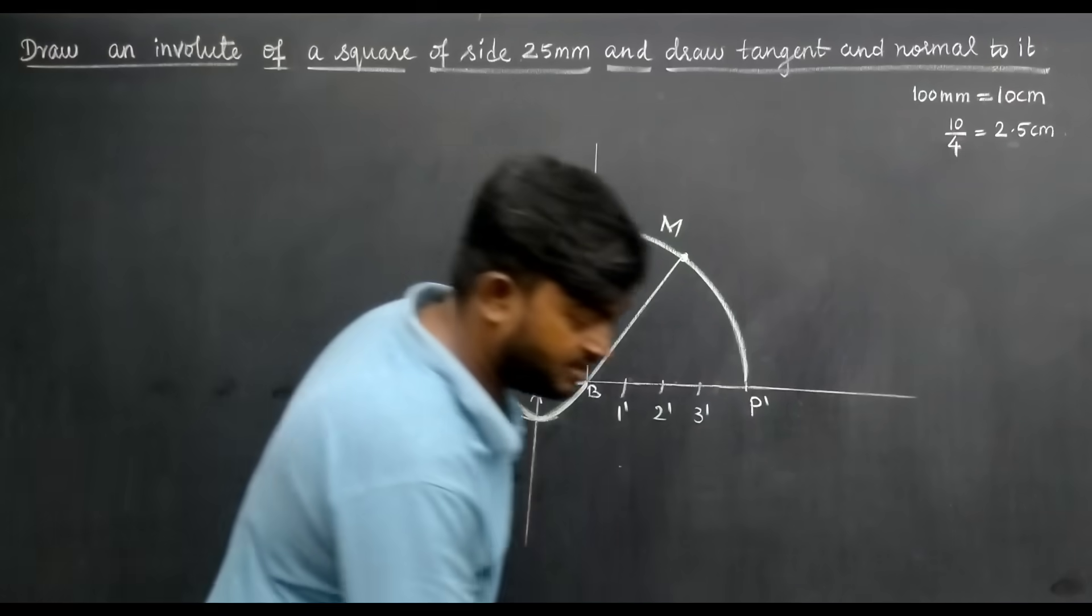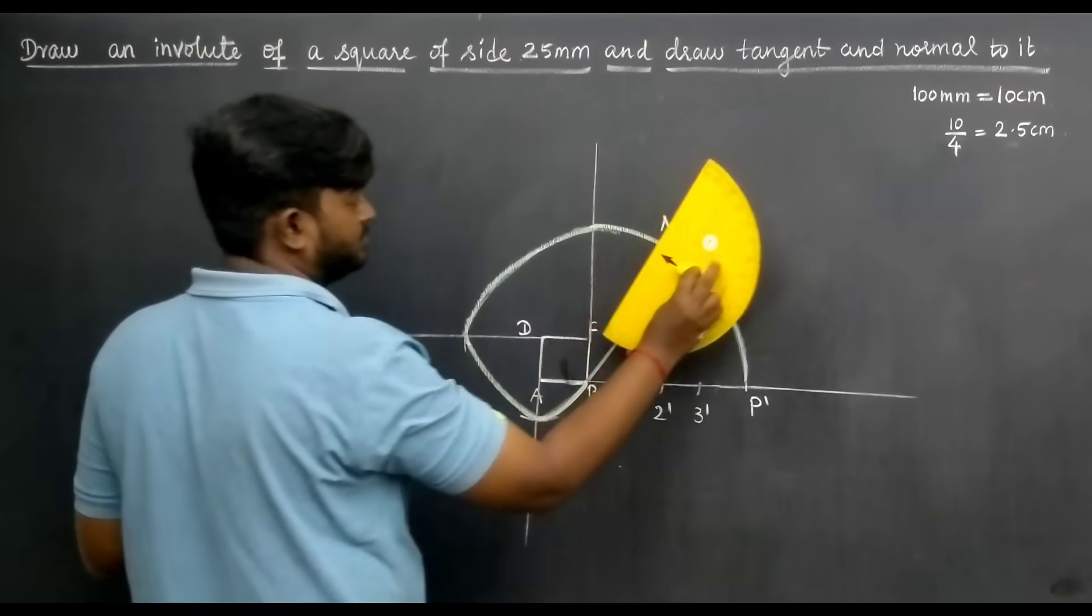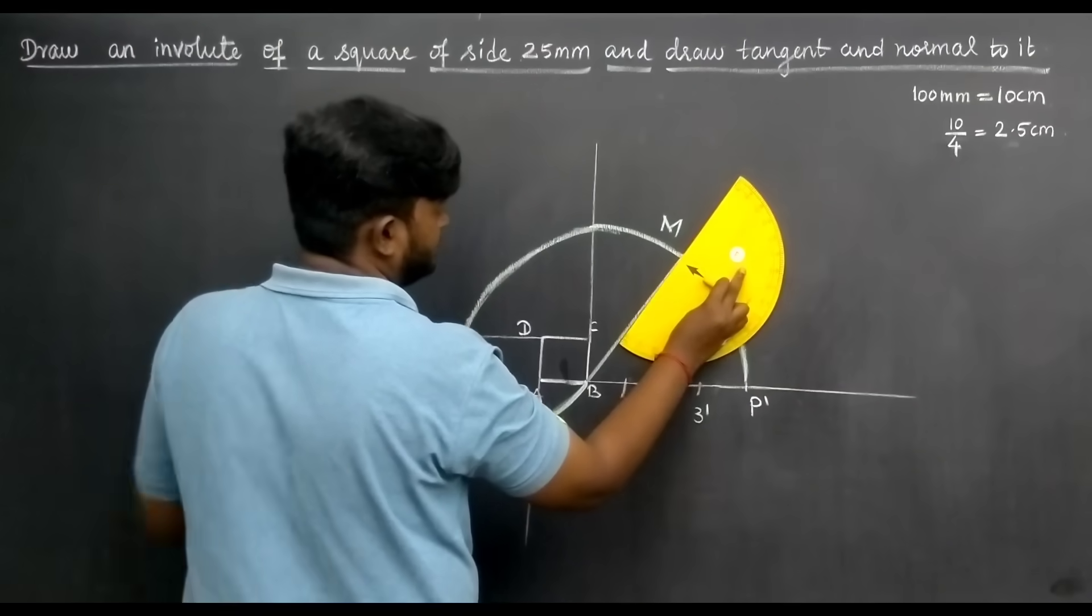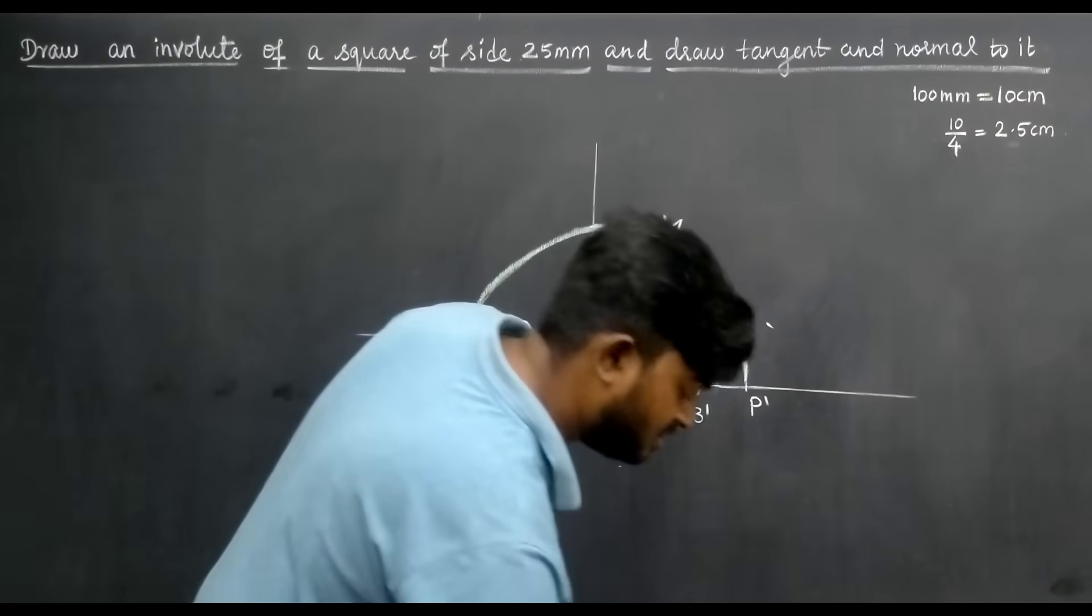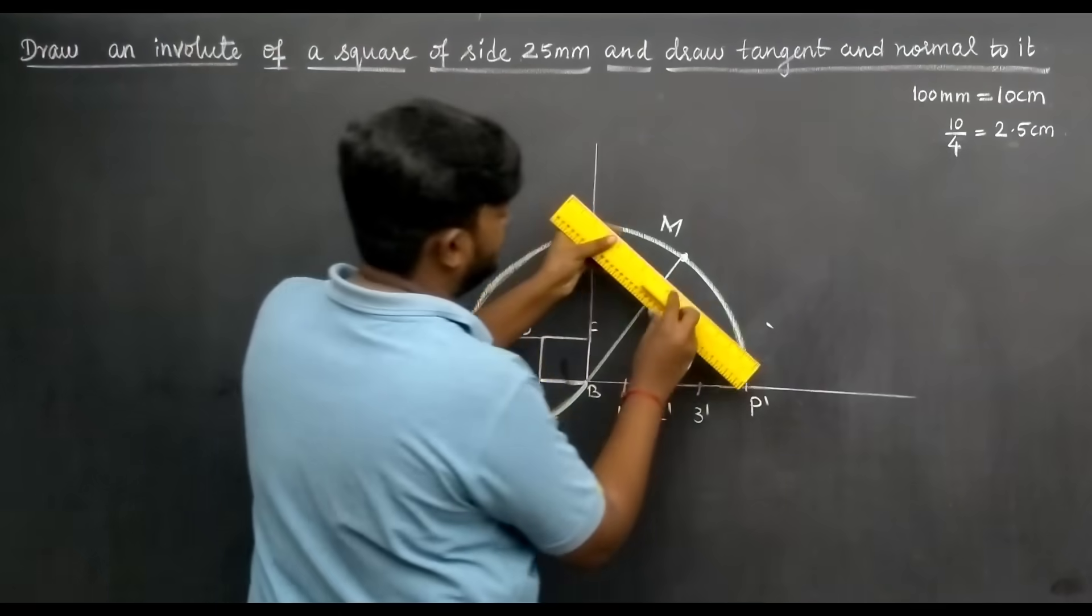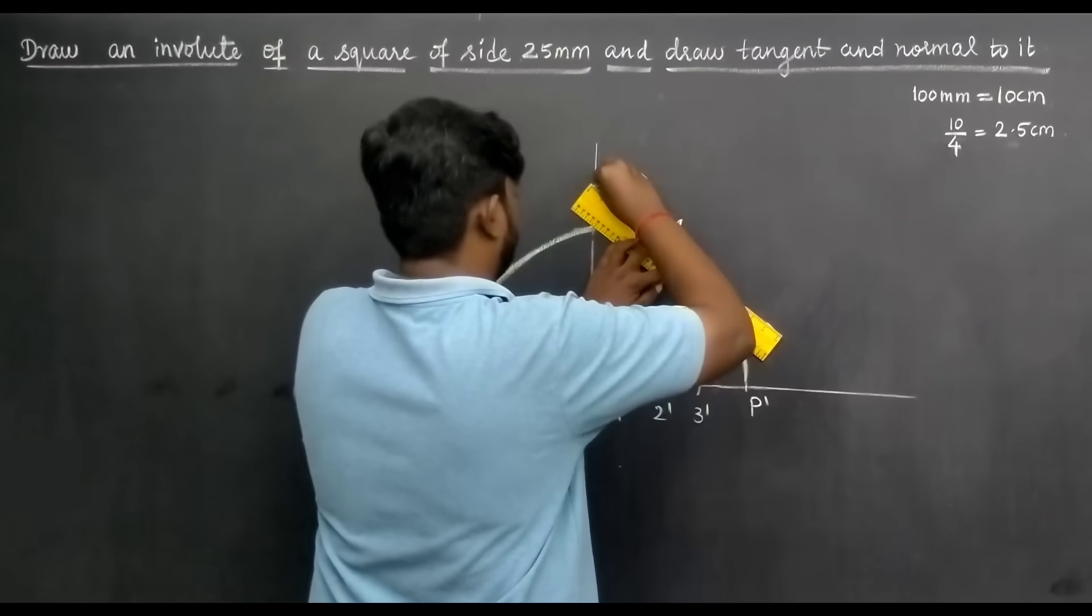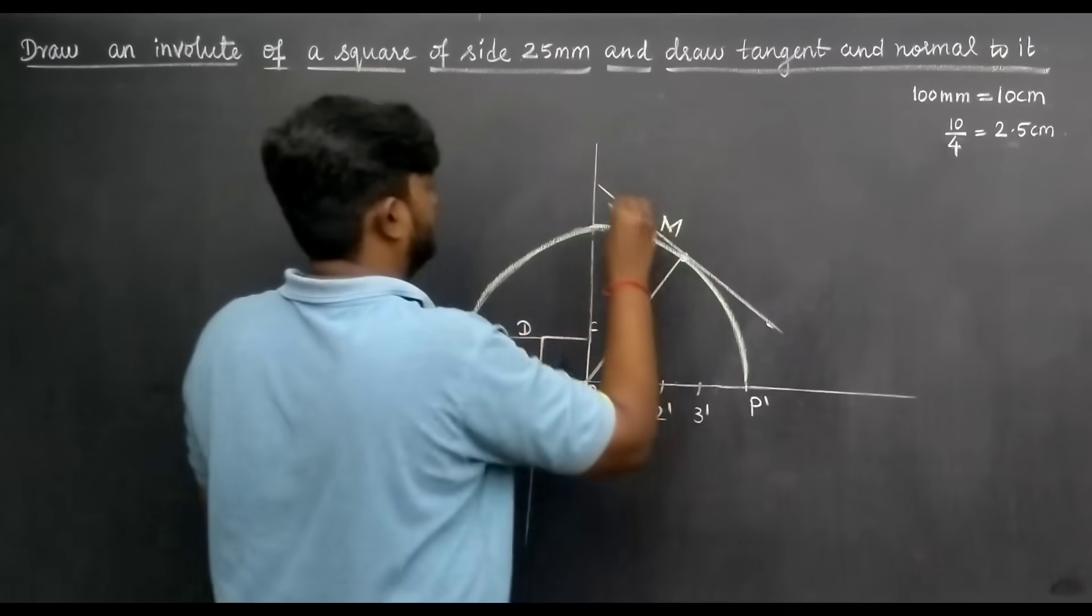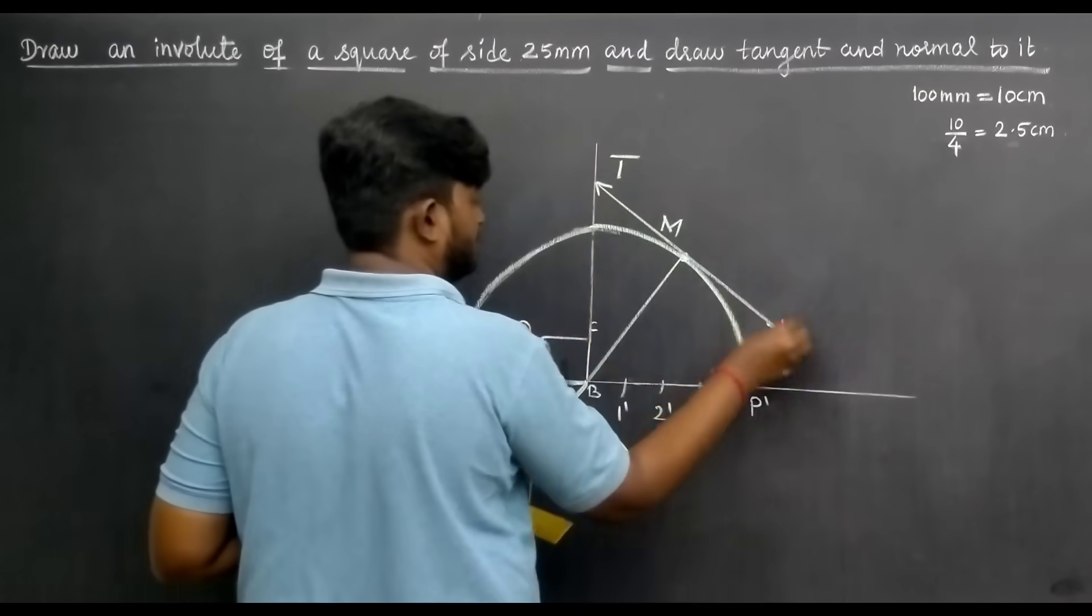Now take the protractor and place it at the M point. Mark 90 degrees. If you mark it, you get a straight line. So here is the line. This is the tangent. Mark it as T-dash. This is M.